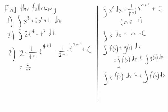And we can rewrite that as 2 fifths t to the fifth minus 1 third t cubed plus C.